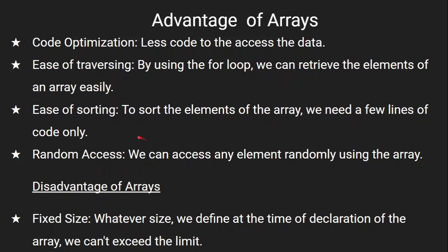Then there is ease of sorting. Sorting is the arranging of elements. Once you know the sorting logic — there are many sorting logics, but normally we use bubble sort — sorting is made easier with a few lines of code. The next advantage is random access: we can access any element of the array randomly. For example, I want to access the fifth element A[4], or the tenth element A[9]. We can access any particular element of the array randomly.